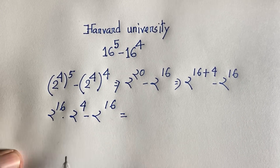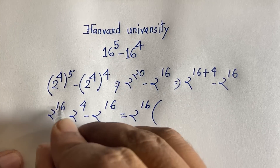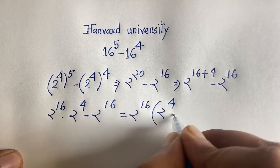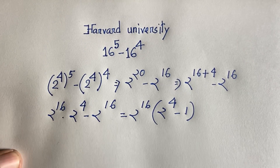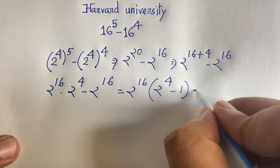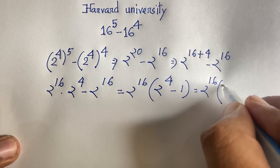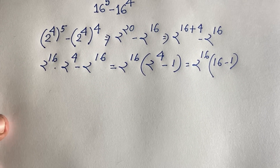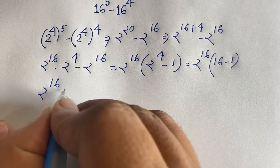In this expression, 2 to the power 16 is common. Factoring it out, we get 2 to the power 16 times the quantity 2 to the power 4 minus 1. So the expression becomes 2 to the power 16 times 2 to the power 4 minus 1.